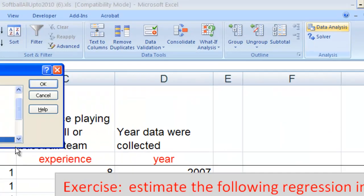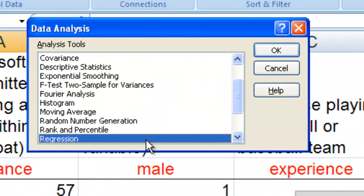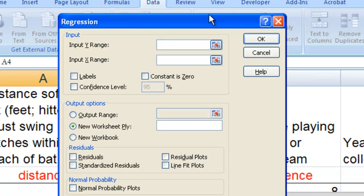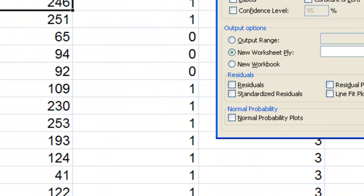I'm going to click on data analysis and then I'm going to choose regression. After I've chosen regression, Excel is going to ask me for a number of things.